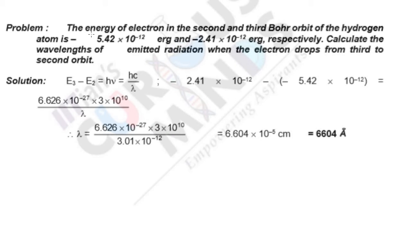Hello friends, let us solve this problem. The energy of electron in the 2nd and 3rd Bohr orbit of hydrogen is -5.42 × 10^-12 erg and -2.41 × 10^-12 erg respectively. Calculate the wavelengths of emitted radiation when the electron drops from 3rd to 2nd orbit.